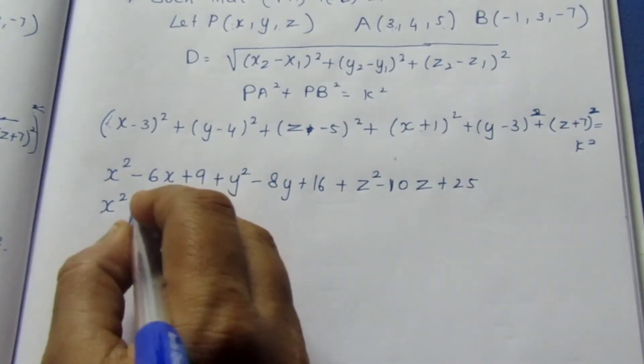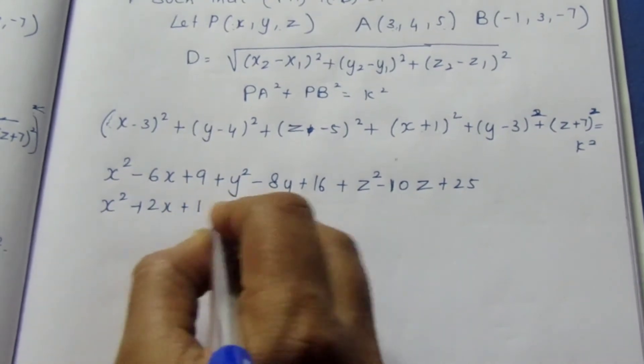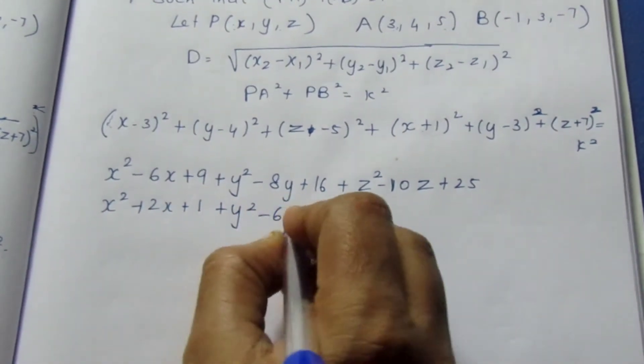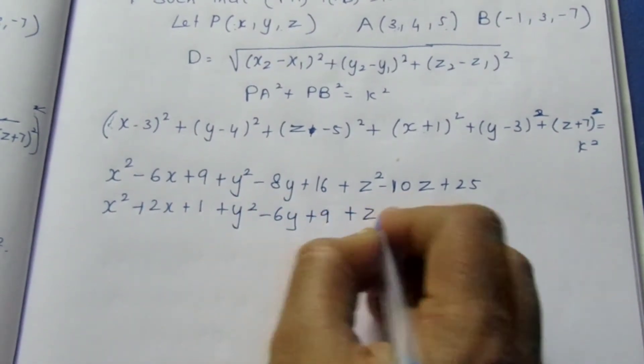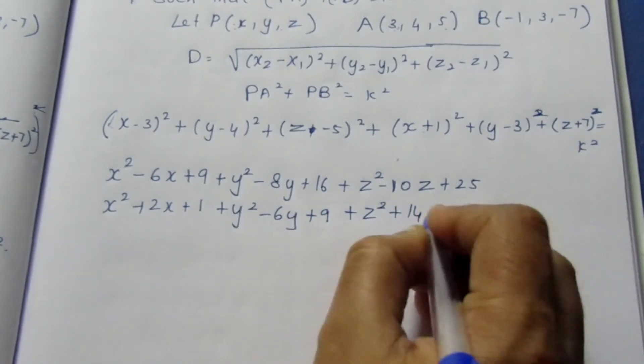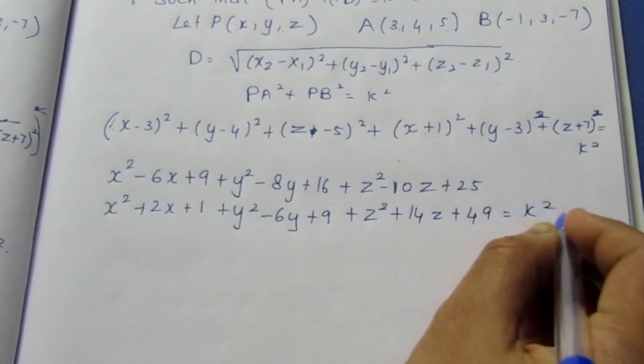X square plus 2X plus 1 plus Y square minus 6Y plus 9 plus Z square plus 14Z plus 49 equal to K square.